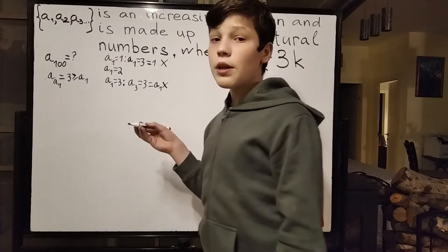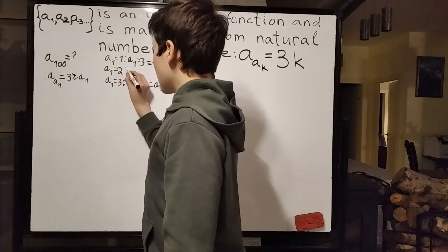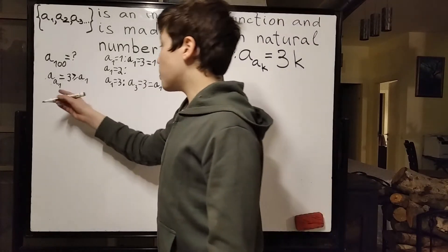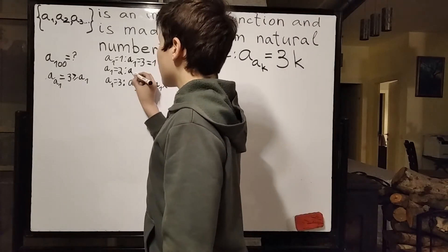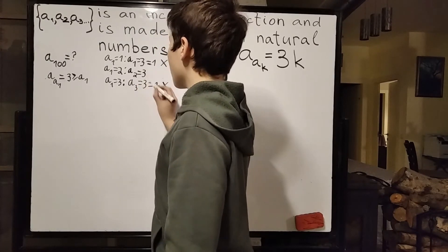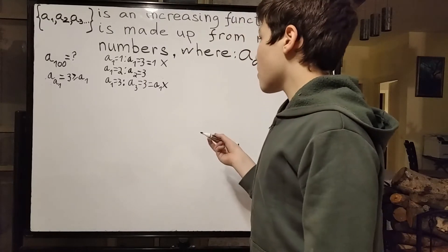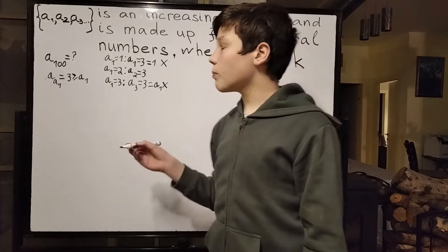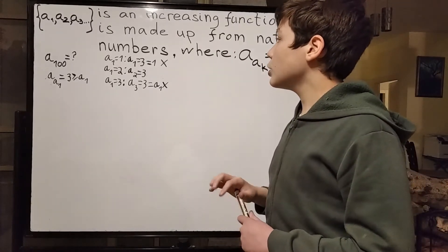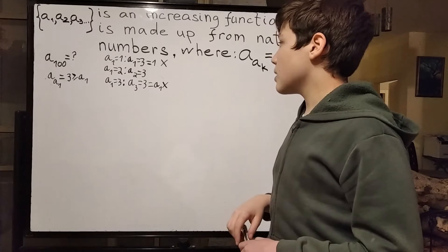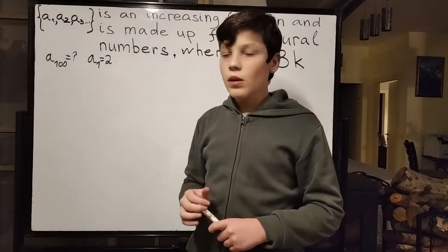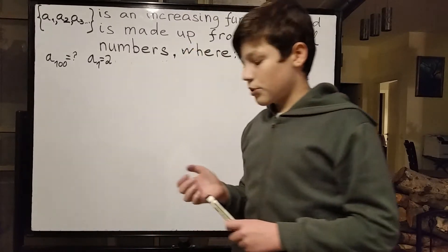And what we're left with is that a1 is equal to 2. A1 equal to 2 works out perfectly. A1 is equal to 2, we plug it in here, we get that a2 is equal to 3, and there's no problem with that. We won't really be using the fact that a2 is equal to 3, but we have established that a1 is equal to 2.